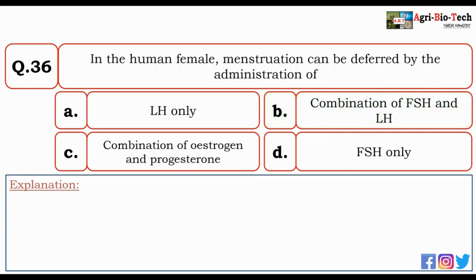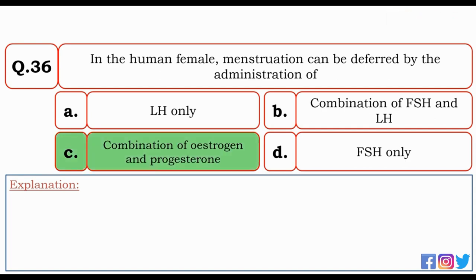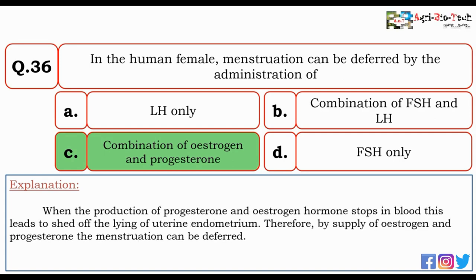Next question: in the human female, menstruation can be deferred by the administration of — LH only, combination of FSH and LH, combination of estrogen and progesterone, or FSH only? The correct option is C — combination of estrogen and progesterone. When production of progesterone and estrogen stops in blood, this leads to shedding of the uterine endometrium lining. Therefore, by supplying estrogen and progesterone, menstruation can be deferred.